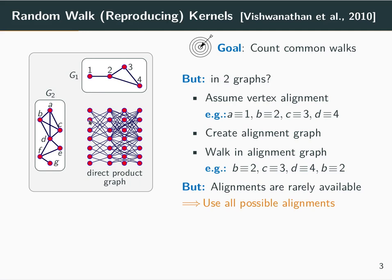This gives rise to the direct product graph. This has one super node for each combination of vertices of the original graphs, and can be computed as the adjacency matrix that arises from the Kronecker product between the two original adjacency matrices.